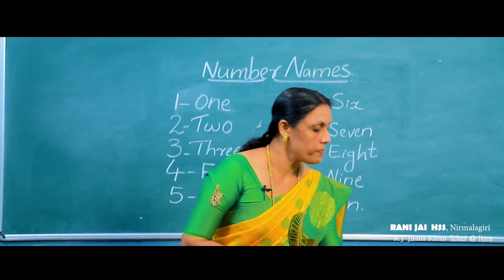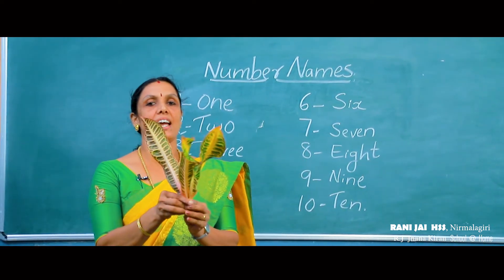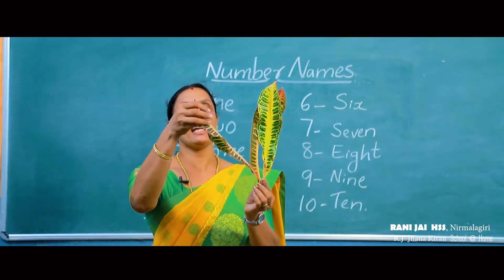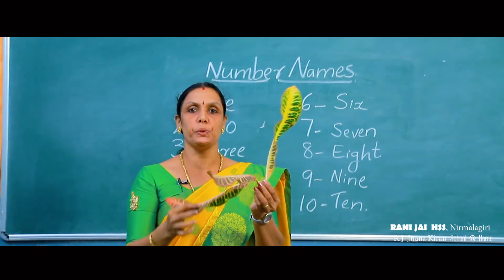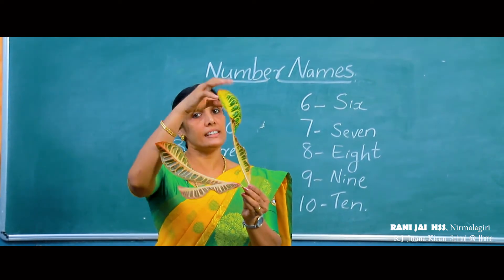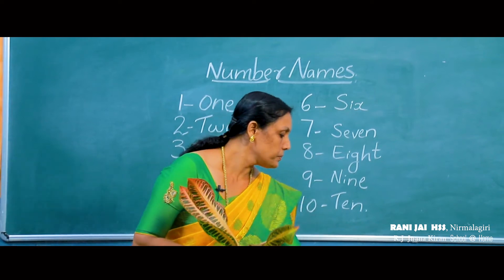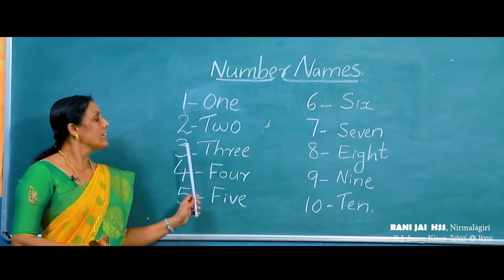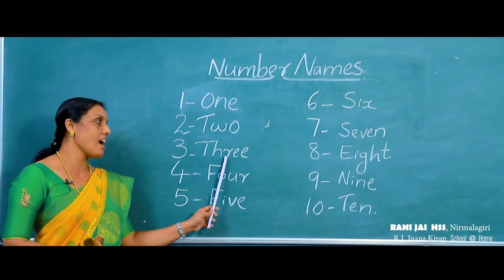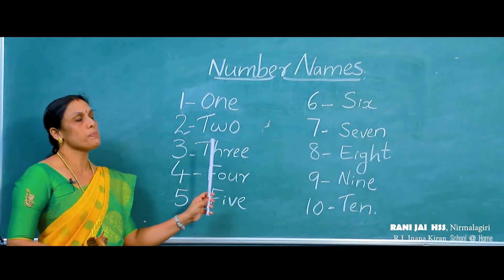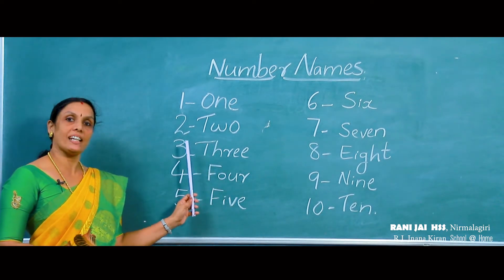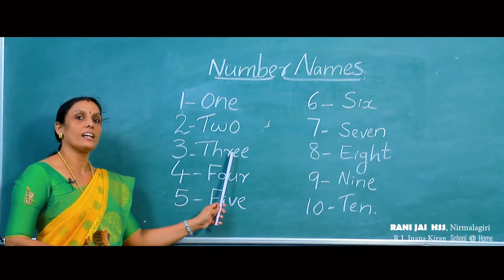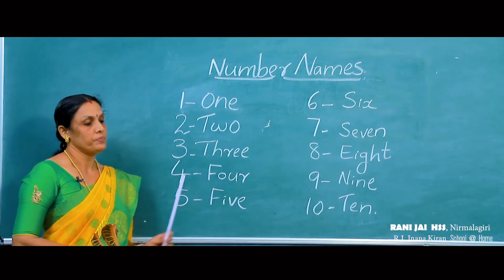Now, how many leaves in my hand? Shall we count it? 1, 2, 3. The number name of 3 is T-H-R-E-E. Spell the number 3 as T-H-R-E-E.